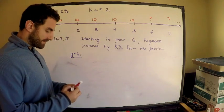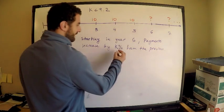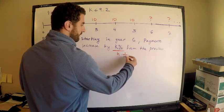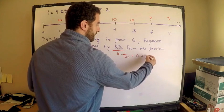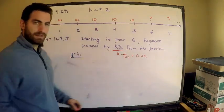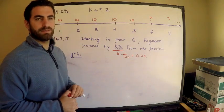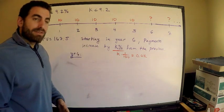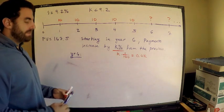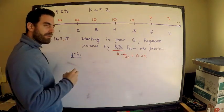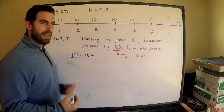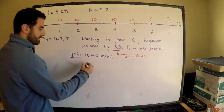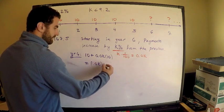They increase by K percent. What does percent mean? Percent means out of a hundred, so this is K times 1/100, or 0.0K. What's the payment going to be in year six? It's K percent more than the preceding year. In other words, it's 10 plus K percent of 10, which is 10 plus 0.0K times 10. This equals 1.0K times 10.